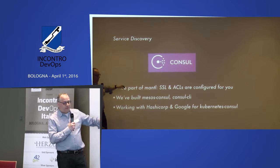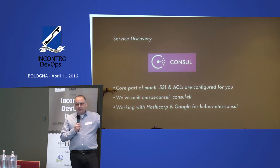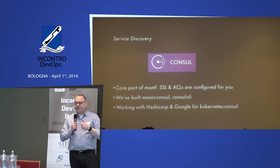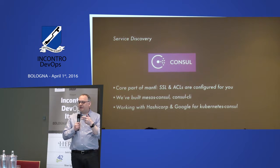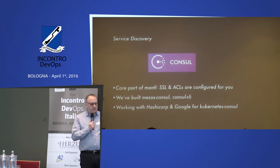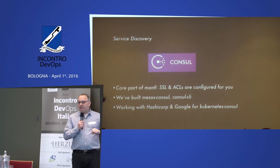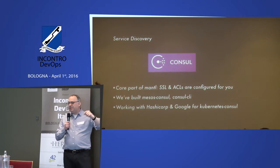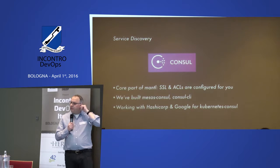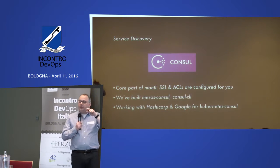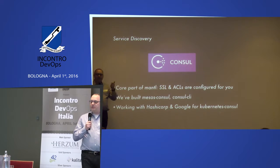In Mantle we set up Consul with ACLs and SSL enabled — otherwise anyone could register services. We've built tools around this like Mesos-Consul, which automatically launches a Consul agent every time you launch a Mesos task. We're also working with HashiCorp and Google to integrate Kubernetes service discovery with Consul, so we'll have a single service discovery backend. The goal is that if you're running a task in Kubernetes you can look up 'X.service' and be automatically routed to something running in Mesos.